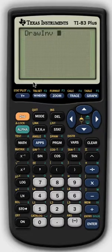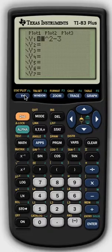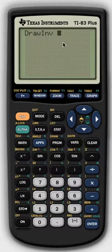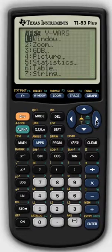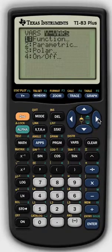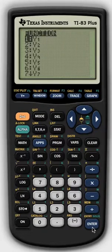I need to put, if you noticed, I put mine under y1. So right here I need to put y1. To find y1, it's under vars, you go over to yvars, and you pick function number one. And there's y1.